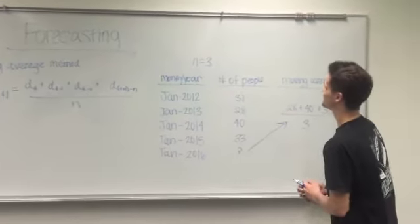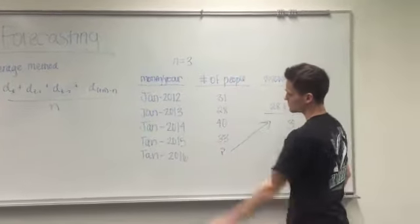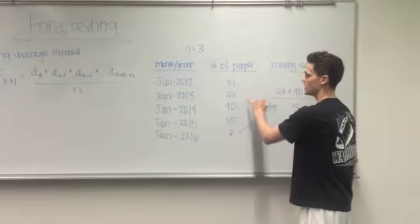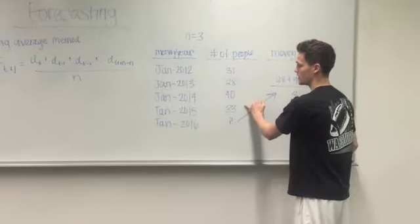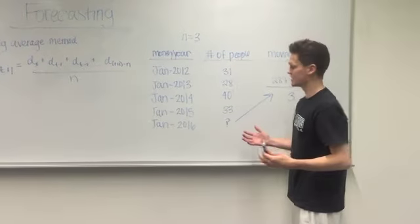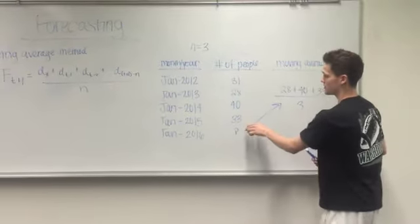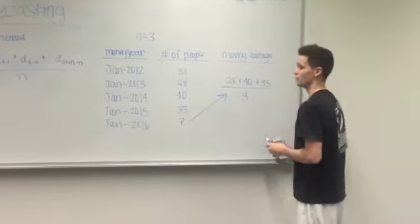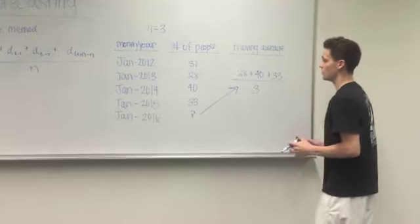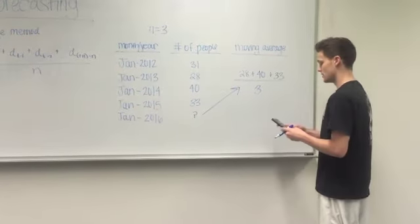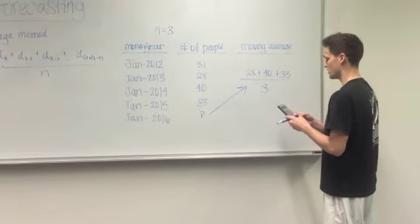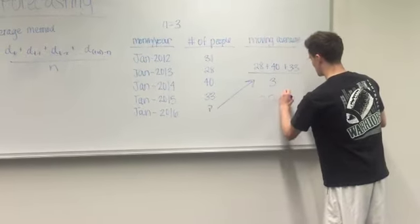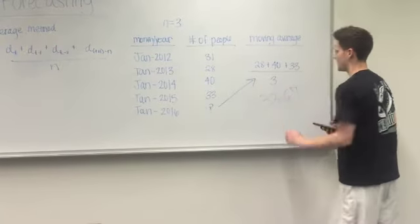So if we go over here, we have n of 3. We have January 2012 with 31 people, 2013 we had 28, then 40, then 33. So now we can predict January 2016. We add up the three prior periods — that comes to 101 people — and divide that by three. So 101 divided by 3, we get 33.67. And that's the moving average.